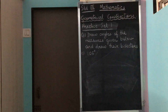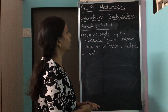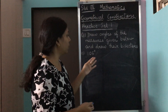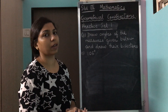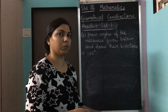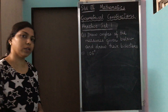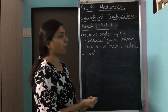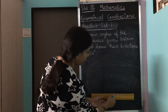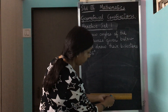So, practice set 1, question 2: draw angles of the measures given below and draw their bisectors. The first measurement given is 105 degrees. I will do the first one; the second and third you will do yourself. I am going to first draw my angle of 105 degrees. We start by drawing the base and giving a name to the angle.